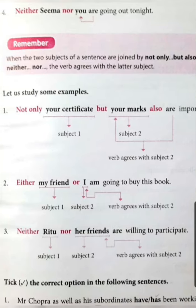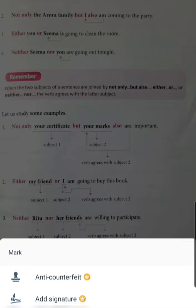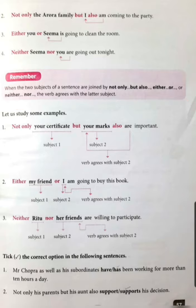So this rule says that whenever two subjects are joined by 'not only...but also', 'either...or', or 'neither...nor', the verb agrees with the latter subject — and the latter subject means the second subject.